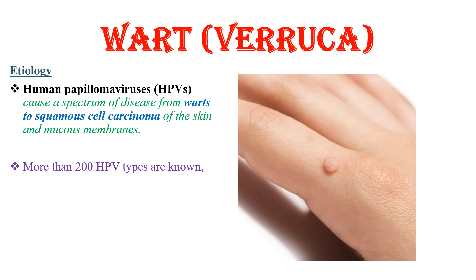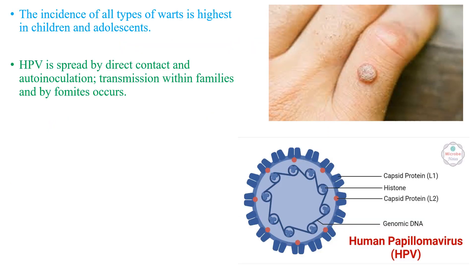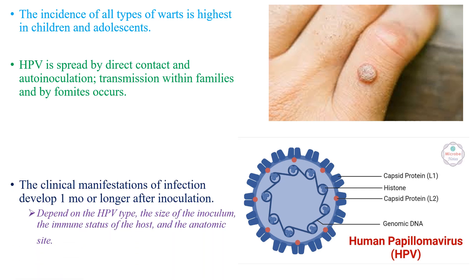More than 200 human papillomavirus types are known. The incidence of all types of wart is highest in children and adolescents. Human papillomavirus is spread by direct contact and auto-inoculation; transmission within families and via fomites can also occur.